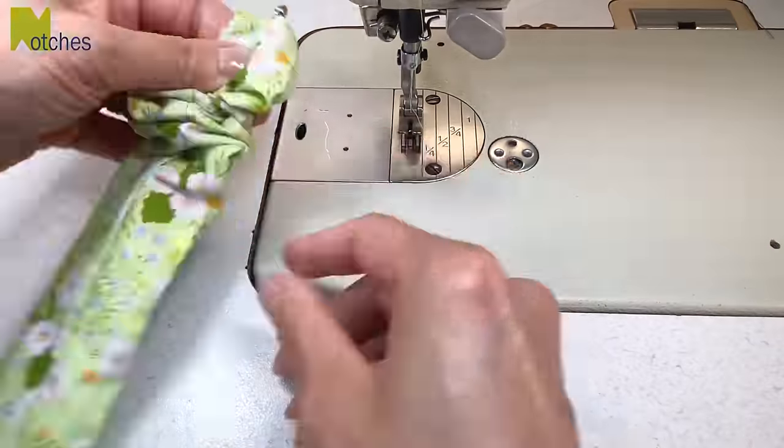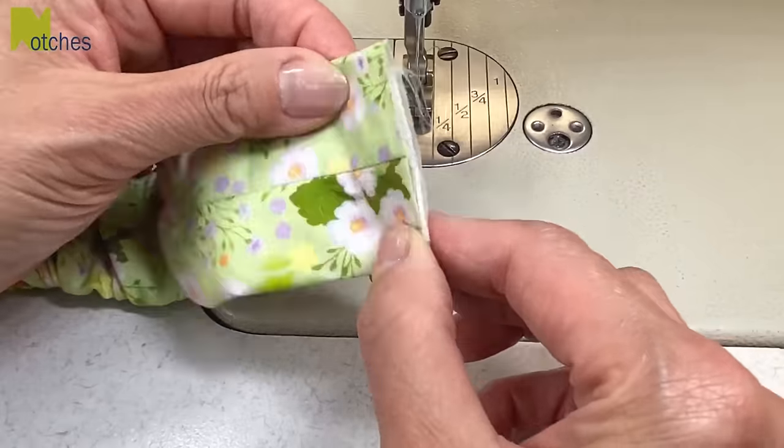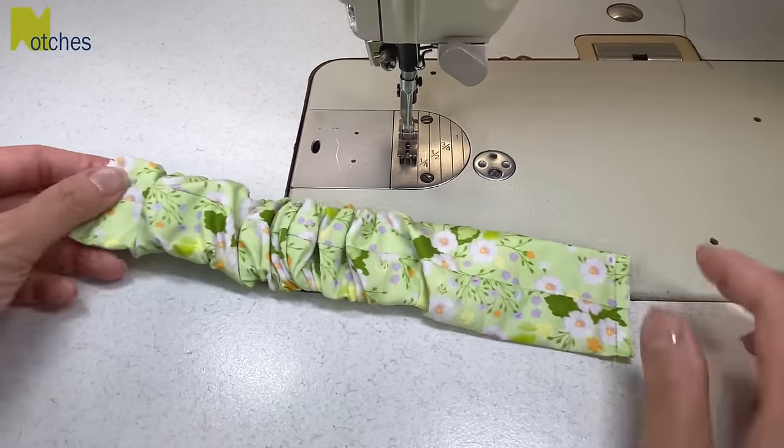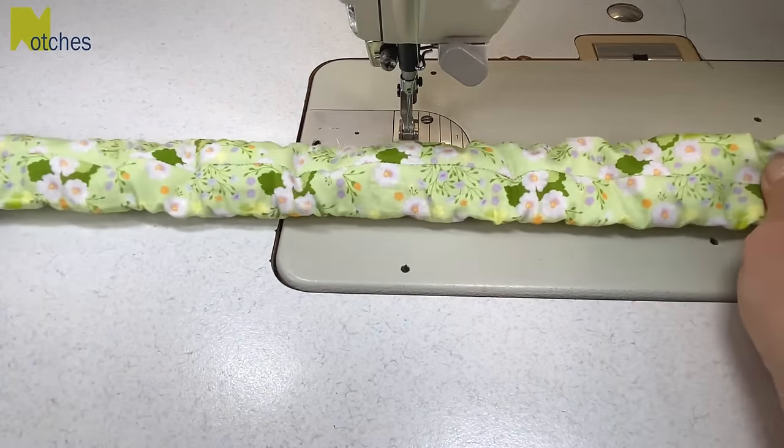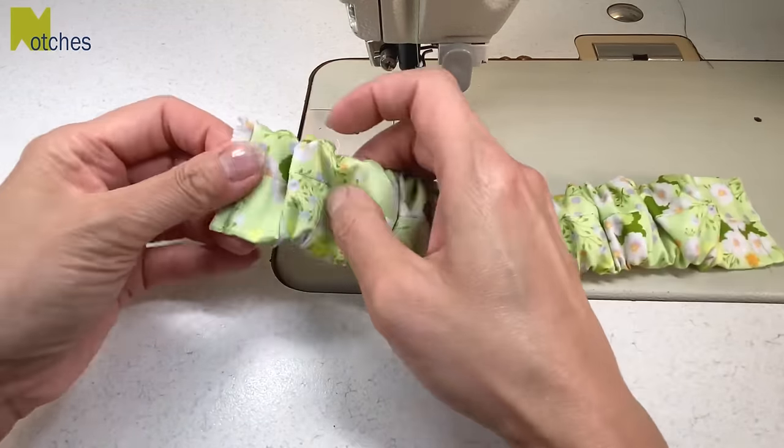Pull the rest of the elastic through, remove the bodkin and stitch in place. Stretch to even out the gathers and then push the gathers on each end so that about two inches of fabric is flat on each side.